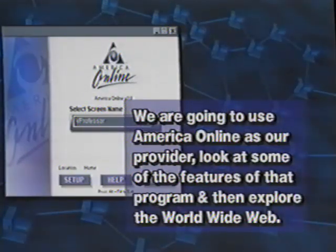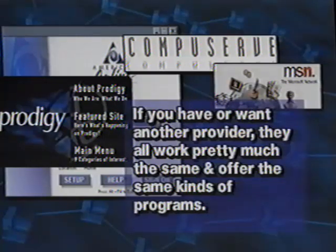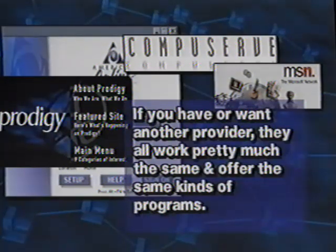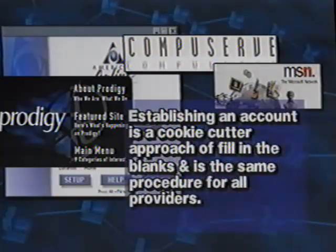We are going to use AOL as our provider, look at some of the features of that program, and then explore the world wide web. If you have or want another provider, they all work pretty much the same and offer the same kinds of programs, so you can still learn what these programs do and how they work just by observing our journey into cyberspace. After deciding on your provider, the first thing you need to do is establish an account with them so you can use their services.